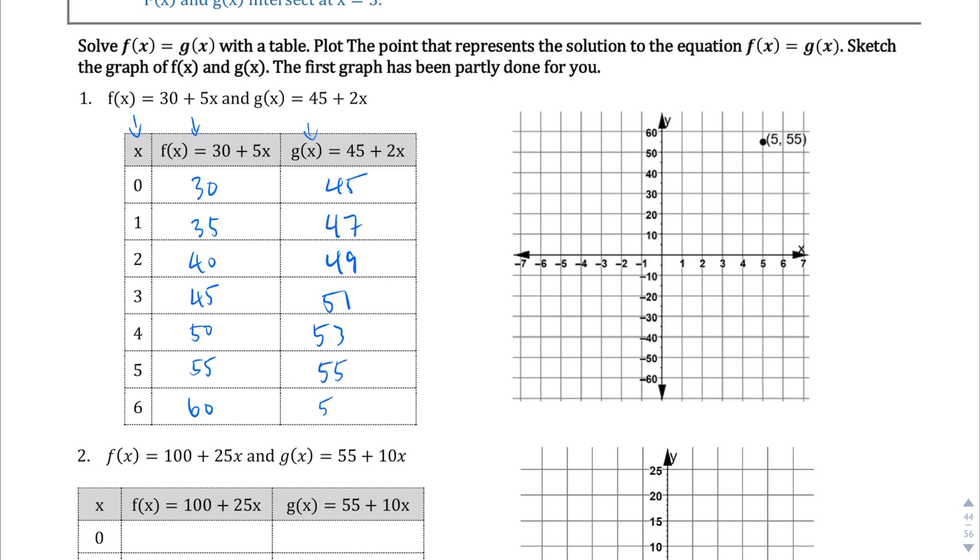And so if we go ahead and graph this, we'll see our, for the f(x), our y-intercept is there at 30. So from 30 to that intersection point there. I'm going to make this a little longer and then move it over. So there we go. There's our first line. So that's the f(x). And I should have made it a different color. Let's make g(x) a different color. Let's make this green. And the g(x) is going to have an intercept of 45. So right there. Through that intersection point right there. So that's the g(x). Okay. So that is the graph.